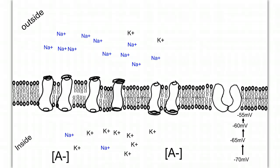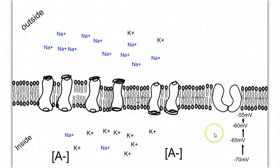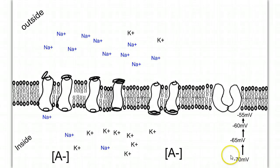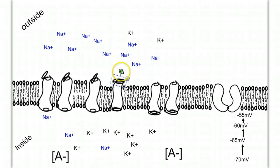So to recap: a neuron at rest has a resting potential of negative 70 millivolts due to the uneven distribution of ions across the membrane, with more sodium out and more potassium in, so the inside is more negative than the outside. Upon stimulation, gates will open that allow sodium to come into the membrane, slowly depolarizing the membrane from negative 70 towards negative 55. If we reach the threshold potential of negative 55 millivolts, all the sodium gates will open and a massive influx of sodium will begin the action potential.